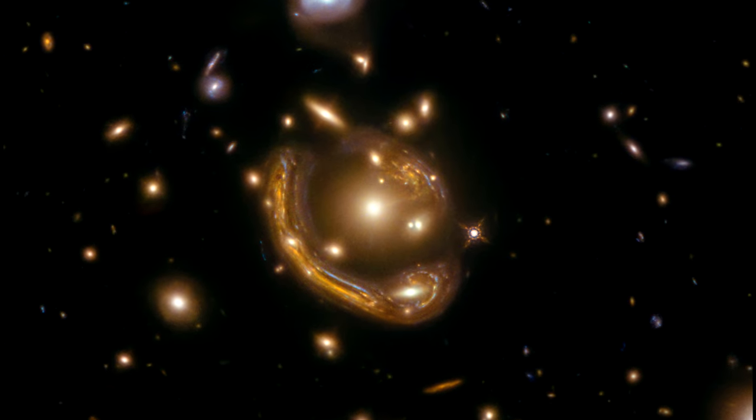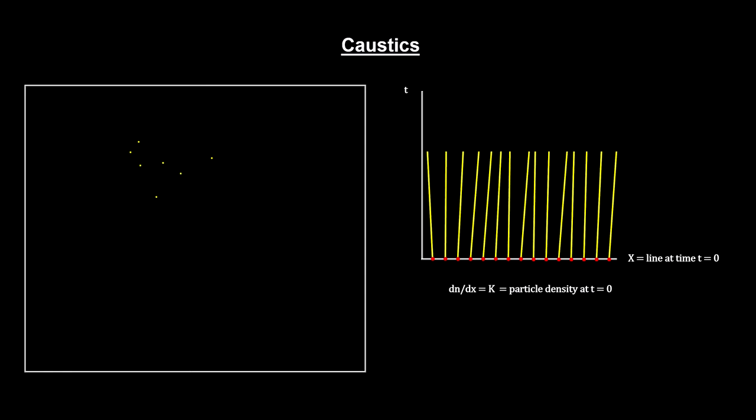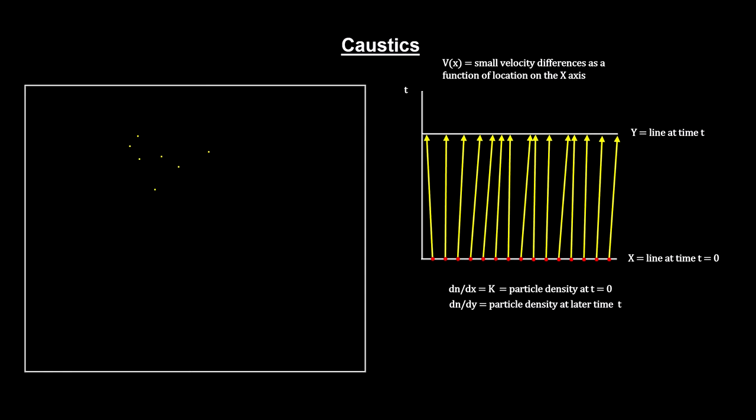Here's how it works. Picture a set of uniformly distributed particles on a line, each with slightly different velocities. They start out with a uniform particle density. But because of the small velocity differences, the particle density will vary as time goes by. Areas of high and low density will develop.